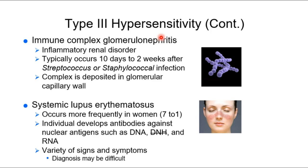Systemic lupus erythematosus is listed in type 3 but is somewhat of an outlier. Lupus involves widespread inflammation with multiple organ involvement — we'll see it under skin because of the rash, and under various systems because of organ involvement. We will call lupus autoimmune, but the antibody-antigen complex framing doesn't quite fit cleanly.